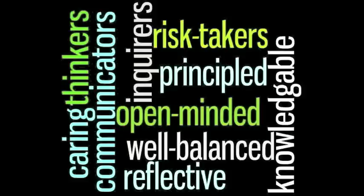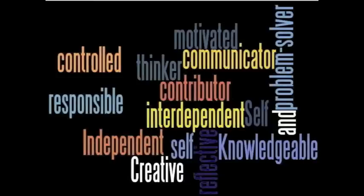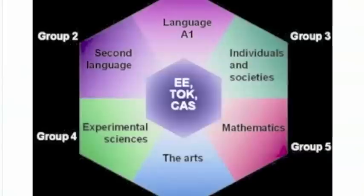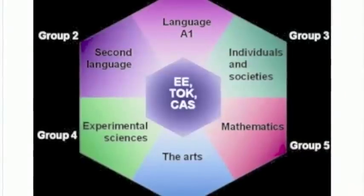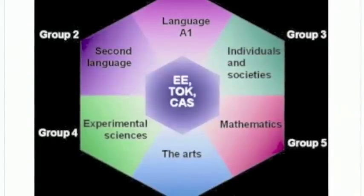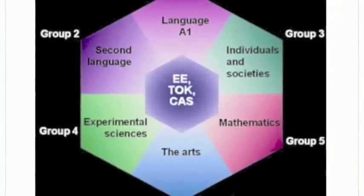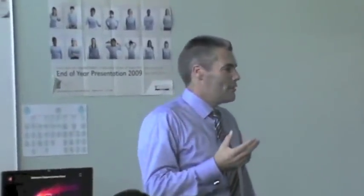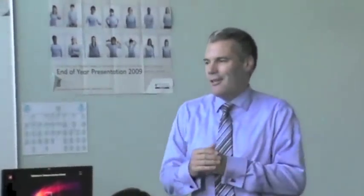I'm going to cut right into the detail now. There are six groups of subjects and you need to do one subject from each group. The first group is language A, language 1, and that would for most of you be English. Your English program as you know it now will continue if you choose the IB. Group 2 is the second language.